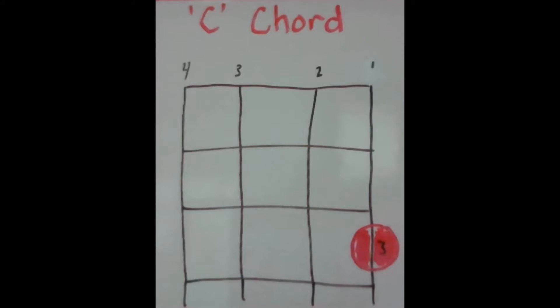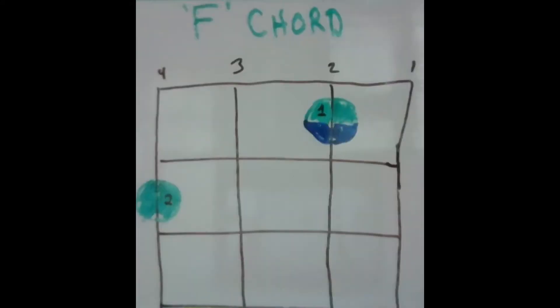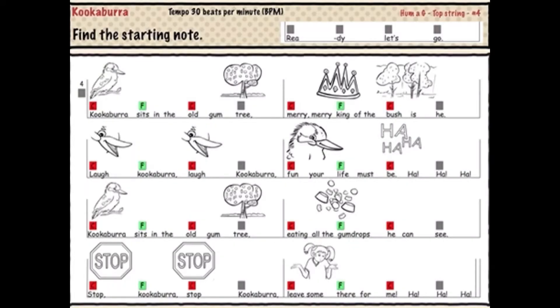We'll be using the C chord and the F chord for the song Kookaburra. The C chord is represented by red with the C in it, and the F chord is represented by green with the F in it.